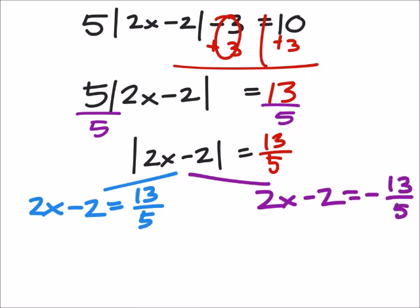And we're going to solve both these equations just for x. So working with this blue one, I would add 2 to both sides. And we need common denominators to add 13 fifths to the 2. That's why we'll make that a 10 fifths.